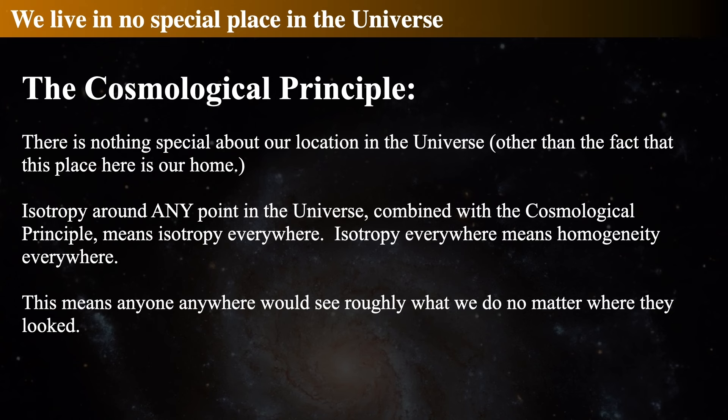If you combine isotropy with the cosmological principle, then everything is pretty much homogeneous everywhere. So that means anybody on any galaxy—if they have people out there on those distant, distant stars—would see the sky roughly the same way we do. Maybe there will be more galaxies, maybe less, maybe more supernovae, maybe more gas, maybe less. But they're going to see galaxies, supernovas, stars and planets like we do. It's going to be the same stuff.